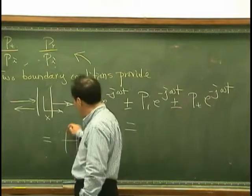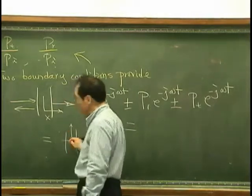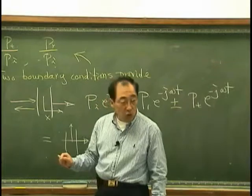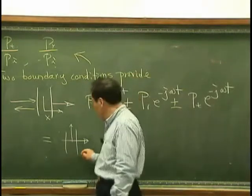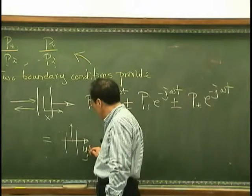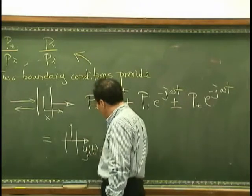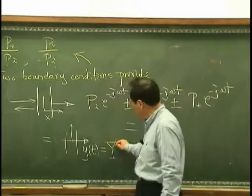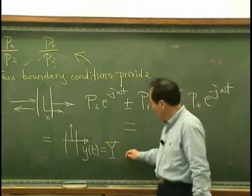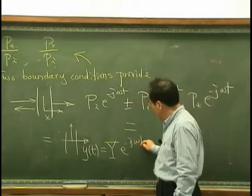So I need another coordinate that measures the motion of the wall, limp wall. So I denote that is y t and that has complex amplitude y exponential minus j omega t.